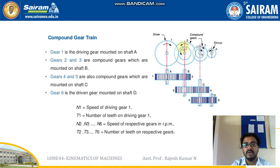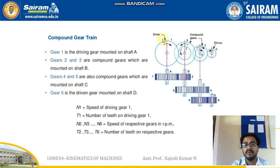We have gear 2 and gear 3 — these two gears form a compound gear because both are mounted on common shaft B. Gear 4 and gear 5 are mounted on common shaft C. Gear 6 is the driven gear, since gear 1 is the driver, and it is mounted on shaft D.